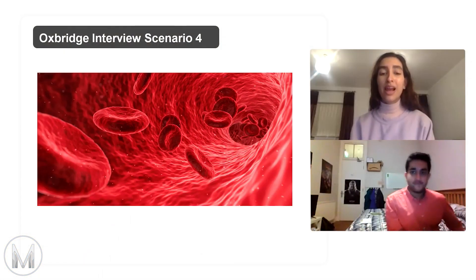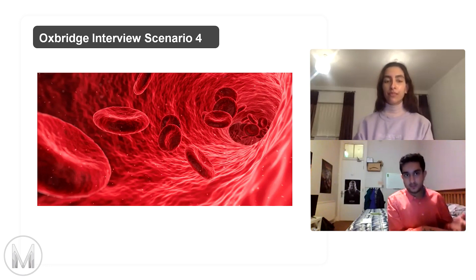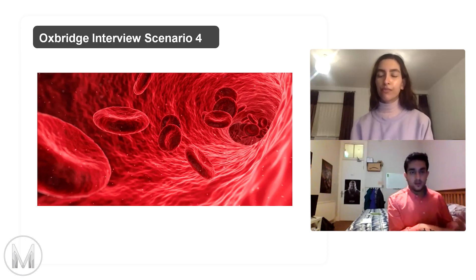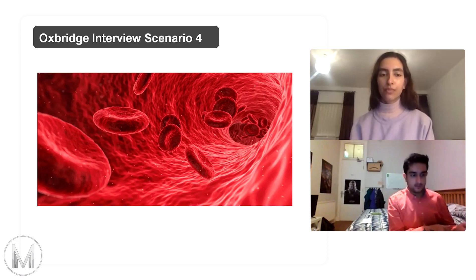What determines the osmolarity of blood? Osmolarity is the amount of solute relative to the amount of fluid. So basically the amount of fluid will be how much water there is, also determined by ion concentrations and all the other things present in blood as solute — like glucose, ions, phosphate, calcium, and urea.